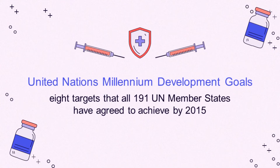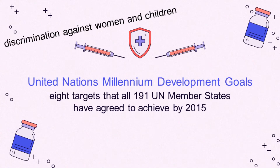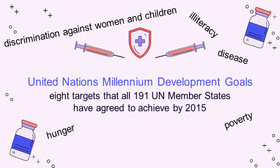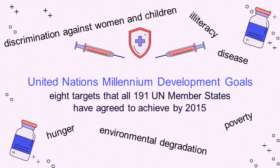The United Nations Millennium Development Goals are eight targets that all 191 UN member states have agreed to achieve by 2015. The United Nations Millennium Declaration, signed in September 2000, commits world leaders to fight discrimination against women and children, disease, hunger, poverty, literacy, and environmental degradation. All of these goals cannot be attained without addressing each and every one.